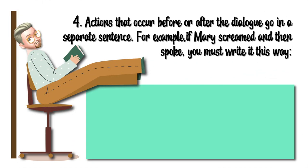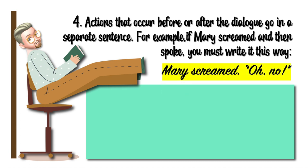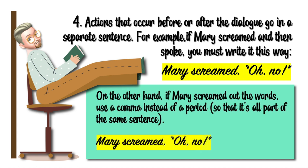Rule number four: Actions that occur before or after the dialogue go in a separate sentence. For example, if Mary screamed and then spoke, you must write it this way: Mary screamed. "Oh no." On the other hand, if Mary screamed out the words, use a comma instead of a period, so that it is all part of the same sentence: Mary screamed, "Oh no."